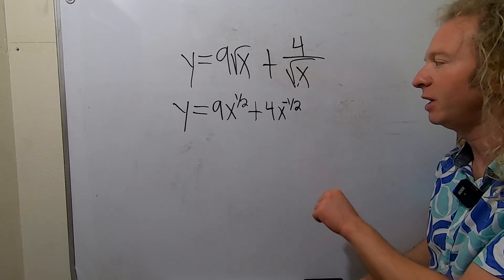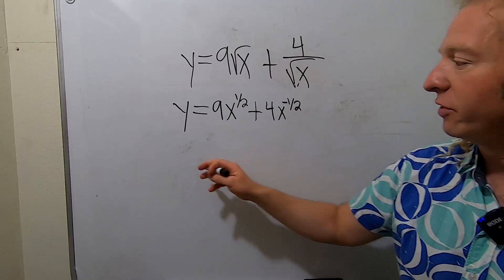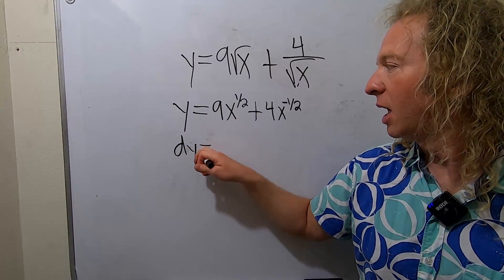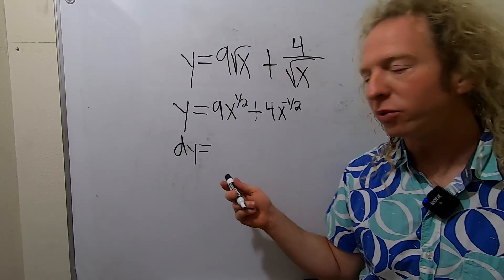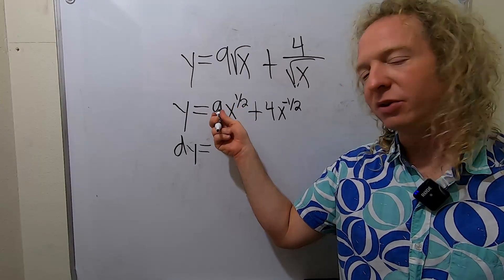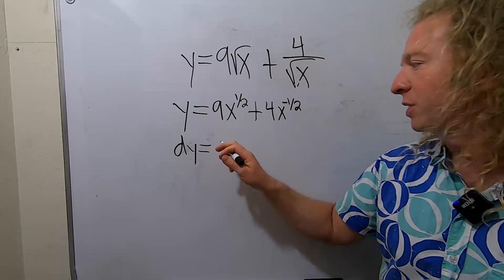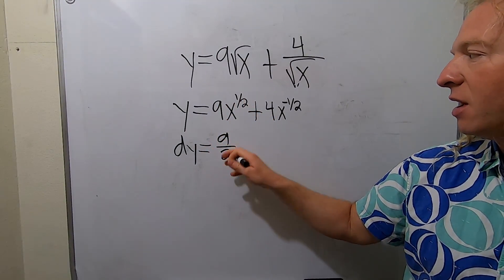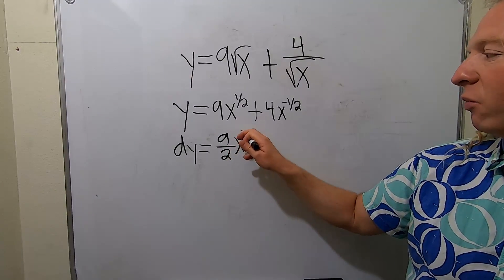Okay, so super key move. So now we just take the derivative, we call it dy, and we just use the regular derivative rules. So you put the 1 half in the front. So we get 1 half times 9, which is 9 halves. Subtracting 1, we get negative 1 half.